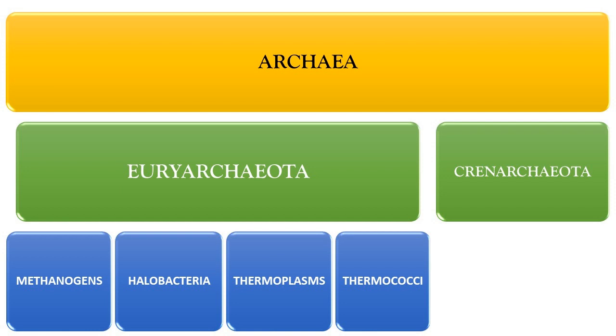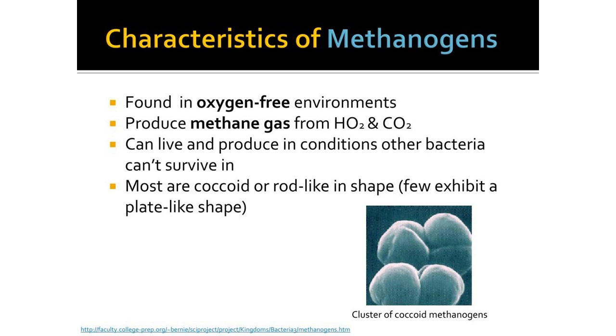Archaeobacterial sulfate reducers are irregular gram-negative coccoid cells. Hydrogen sulfide is formed from thiosulfate and sulfate. Autotrophic growth occurs with thiosulfate and hydrogen, and they can also grow heterotrophically. Traces of methane are also formed. They are extremely thermophilic and strictly anaerobic in nature, possessing factor 420 and methanopterin but not coenzyme M or factor 430.